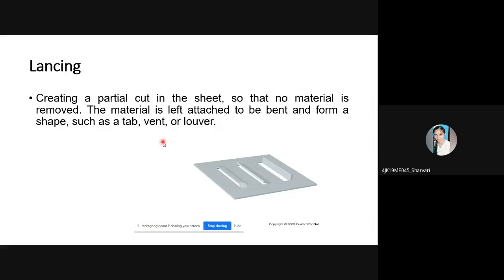Next is lancing operation. Lancing is a combination of piercing and punching — a partial cutting of the sheet so material is not fully removed. The cut portion is bent to a certain angle, like 90 degrees. This is mainly used for decoration purposes.